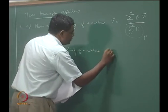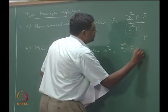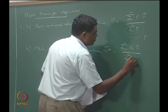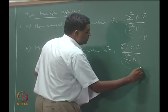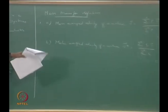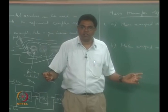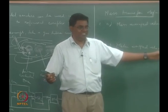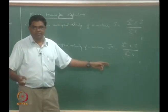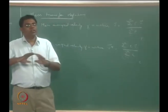We could have also used moles instead of mass, giving the molar average velocity of the mixture — called v-star vector — defined as the sum of Cᵢvᵢ-vector divided by the sum of Cᵢ, which equals C, the molar concentration of the mixture. Is the mixture traveling at velocity v or v-star? Both are not the same, because the Cᵢ's and ρᵢ's are not exactly the same — there is molecular weight coming into the picture. They would be the same only if all species had the same molecular weight, which is not necessarily true: hydrogen has a very low molecular weight compared to butane or carbon dioxide.